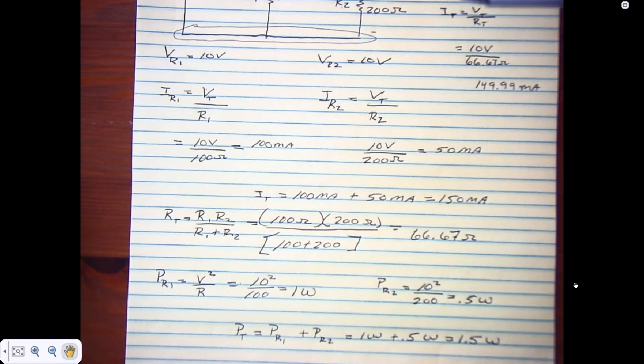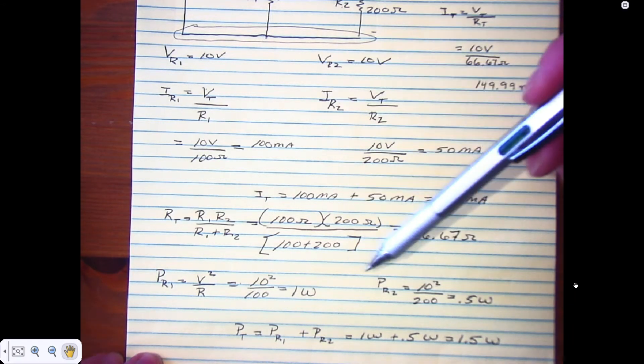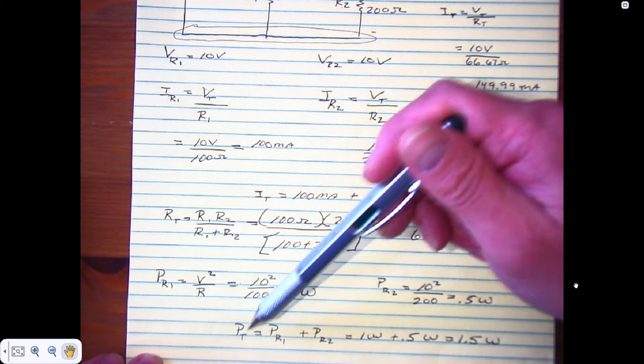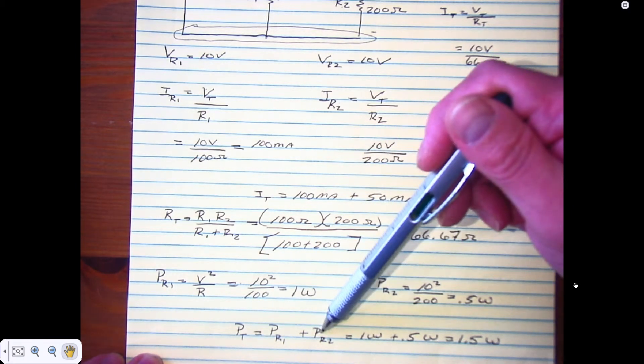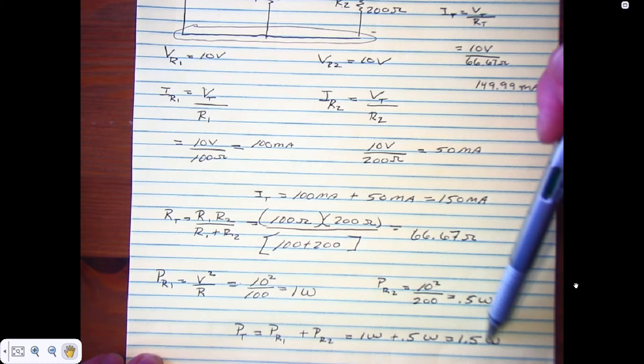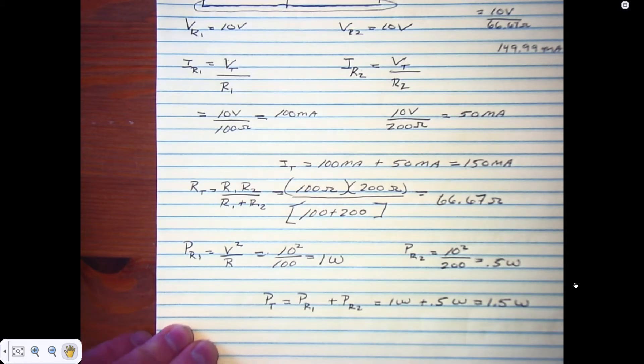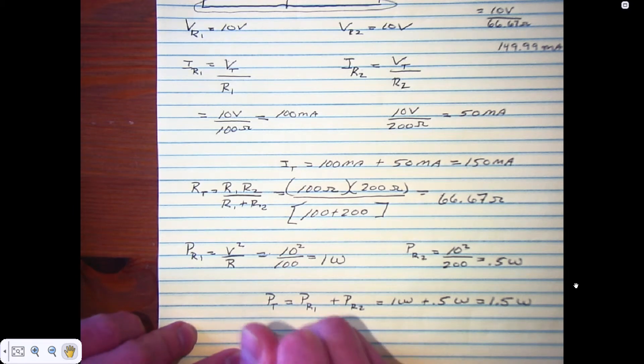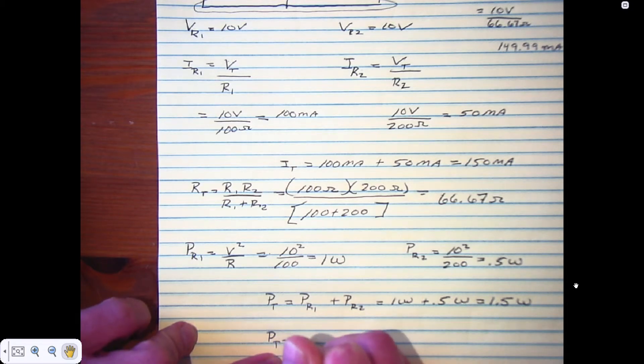If I add up powers here, P total equals PR1 plus PR2, which gives me 1.5 watts of power. I could also say that P total equals I total times V total - that's voltage. Remember V and E are interchangeable.